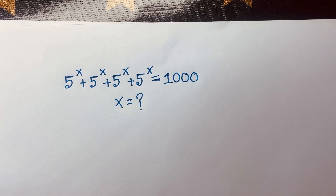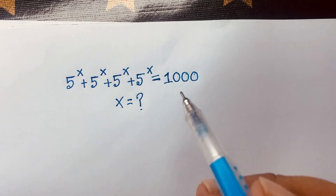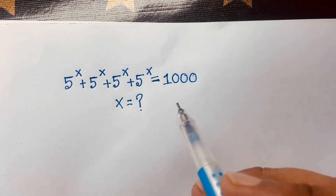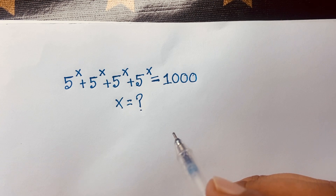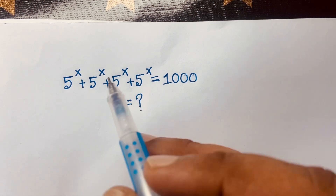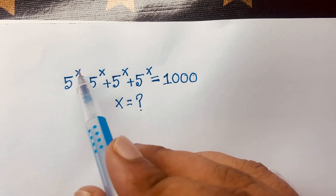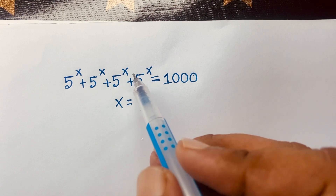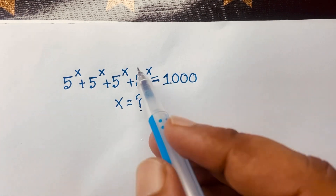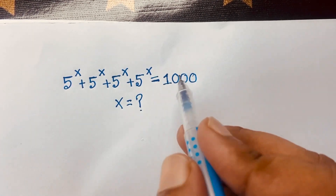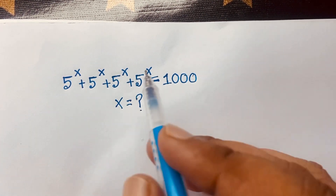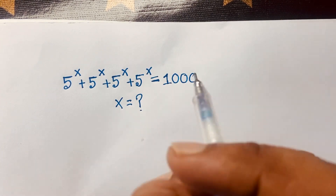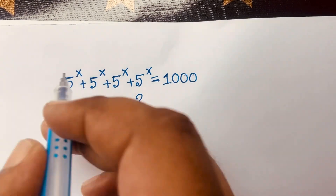Hello everyone. In this video we have solved this exponent problem — it is a German Math Olympiad question. The question is: 5 to the power x plus 5 to the power x plus 5 to the power x plus 5 to the power x is equal to 1000. What is the value of x?